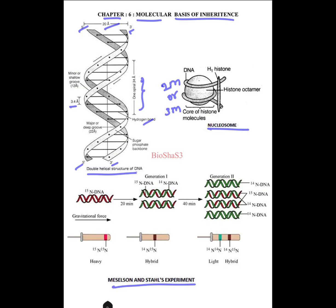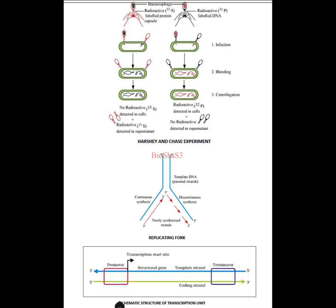For the Meselson and Stahl experiment, you have to write about the heavy DNA and the light DNA — that is the ¹⁵N and ¹⁴N isotopes — so this is heavy, this is hybrid; you can see the light and hybrid bands in your daughter generation. This is very important. The schematic representation of the Meselson and Stahl experiment can also be asked. Then the Hershey and Chase experiment.